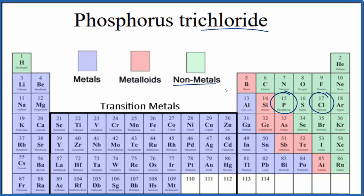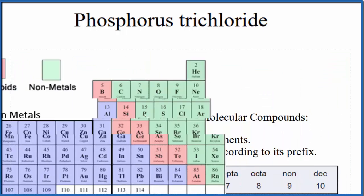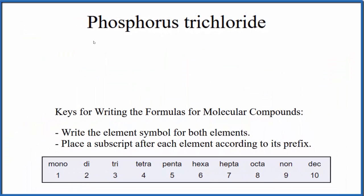When we have two nonmetals, we have what's called a molecular, also called a covalent compound. We can use these rules right here to write the formula for phosphorus trichloride.